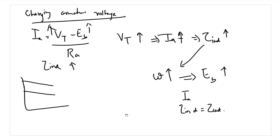So there are two preferred control methods for DC shunt motors: the field control method, by varying the field resistance, and the armature voltage control method, by adjusting the DC voltage input to the armature.